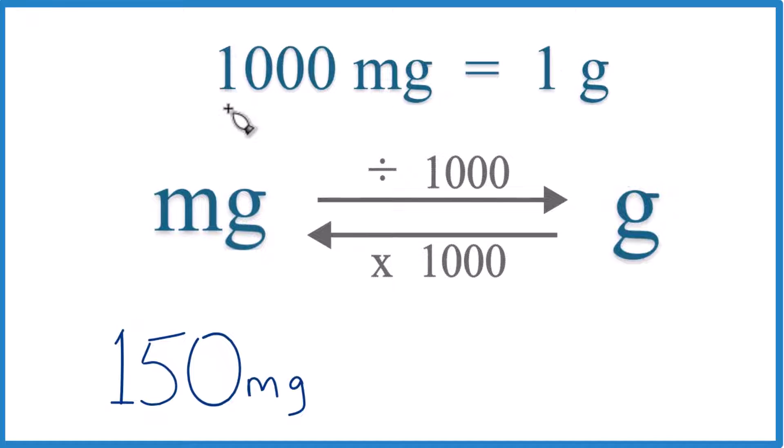First off, you need to know that there are 1,000 milligrams in 1 gram, or you could say that 1 gram equals 1,000 milligrams. We call this a conversion factor, and we need it when we go from milligrams to grams or grams to milligrams.